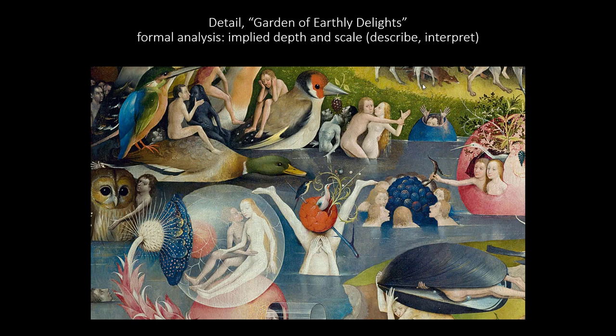Out of the five formal elements and design principles I listed, I'm going to pick two to discuss further: scale and implied depth. Starting with implied depth, I'll concentrate on overlap. You've got this couple here overlapping, this couple here overlapping, and some overlap with this man embracing an owl. What this suggests — this is the describe part, the significance — is that this is indicating closeness. Then there's scale; more specifically, this is hierarchical scale, where different sizes indicate importance. The larger object or person indicates greater importance, so here the birds and the fruit are of primary importance.